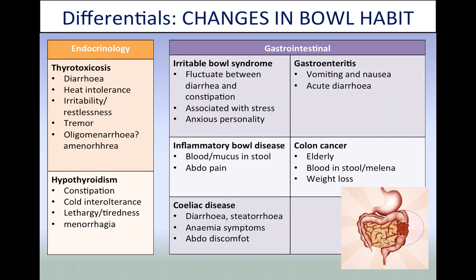Let's discuss some findings one could have with altered bowel habits. IBS patients tend to fluctuate between diarrhoea and constipation, and it's often related to stress. In IBD, the stool tends to be quite bloody and mucousy. Patients with coeliac disease tend to have loose, fatty stool. Patients with gastroenteritis experience diarrhoea often accompanied by vomiting and nausea. Elderly patients can present with colon cancer with melaena and weight loss. It's important to think of other reasons for change in bowel habits — not just GI causes — such as thyrotoxicosis or hypothyroidism.